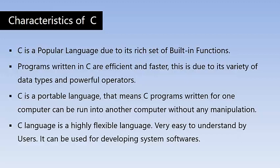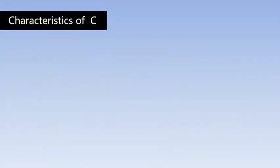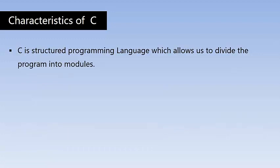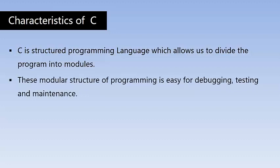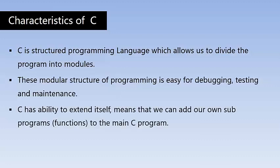C language is highly flexible and easy to understand; it can be used for developing system software. Flexible means it is well suited for a wide variety of problems. C is a structured programming language because we divide the entire C program into smaller parts called modules. This modular structured programming is easy for debugging, testing and maintenance. When you divide a big problem into smaller parts, it is easier to check for errors. C also has the ability to extend itself — we can add our own sub-functions or sub-programs to the main C program.